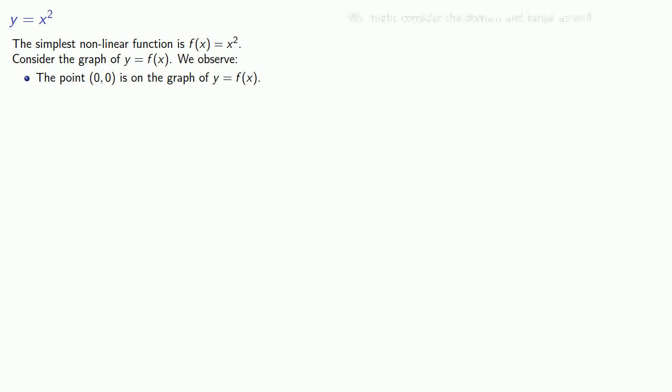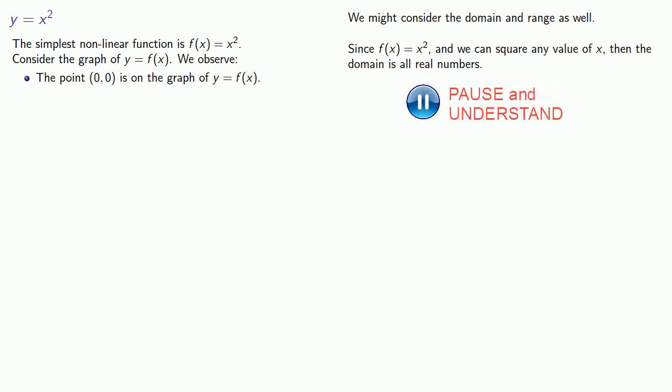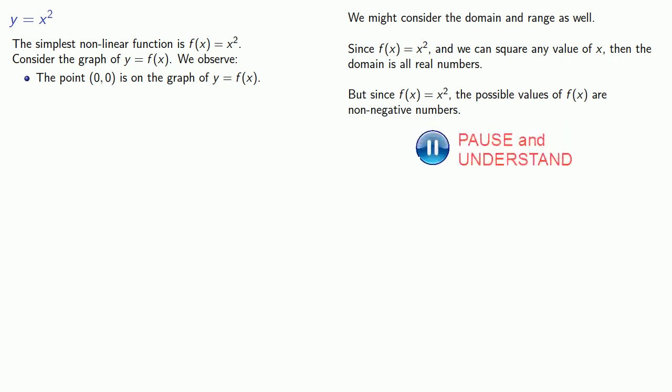We might consider the domain and range as well. f(x) equals x squared, and we can square any value of x. Then the domain is all real numbers. But since f(x) equals x squared, the possible values of our function are non-negative numbers. Since y equals f(x), this also says that the possible values of y are non-negative numbers. This means our graph consists of points (x, y) where x is some real number, but y is going to be in the interval from 0 included all the way to infinity.